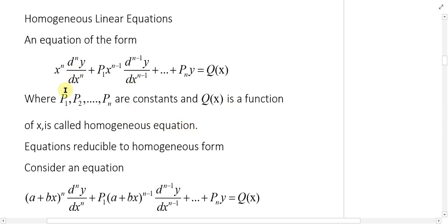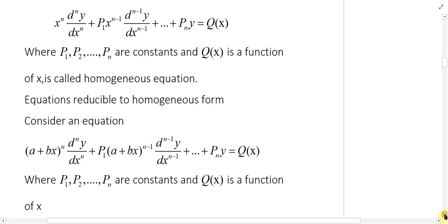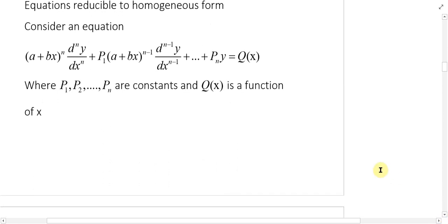Humne in ko solve kiya tha x = e^z put karke, homogeneous equation ko linear equation with constant coefficient mein convert kiya tha. Uske baad, jis tarah se humne linear differential equation with constant coefficient solve ki hai, unhi methods ka use karte hue, humne is tarah ki equations ko solve kiya tha. Aaj hum aise equations ke baare mein padhenge jo homogeneous form mein nahin hain, lekin unko hum homogeneous form mein change karte hain.